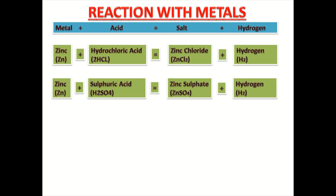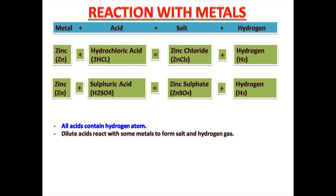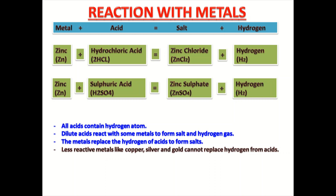So we can conclude these observations: all acids contain hydrogen atom. Dilute acids react with some metals to form salt and hydrogen gas. The metals replace the hydrogen of acids to form salts. One more important thing — less reactive metals like copper, silver, and gold cannot replace hydrogen from acids.